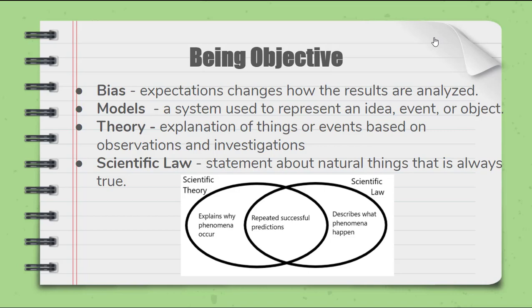A theory is an explanation of things or events based on observations or investigations. So a theory is really why something happens, whereas a law is the statement about things that is always true. So for example, gravity is a law. We know that gravity happens and it's always true. There's really not much of a theory because we don't really understand why objects have gravity. We understand that they have mass and that the more mass that they have, the more gravitational pull that they have. But we really don't understand the fundamental reasons why, on a molecular level, that objects have gravity.